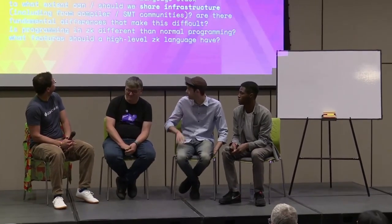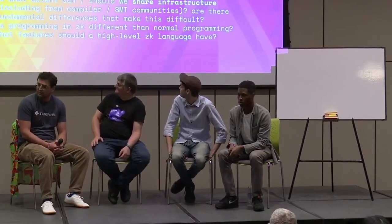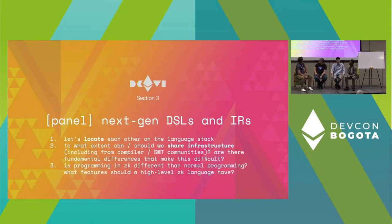Our next panel is on DSLs and IRs for ZK circuits. These are all implementers and authors of some very popular ZK DSLs and IRs. Today we have a few high-level questions: first, to locate each other on the language stack; second, to figure out to what extent we can share infrastructure; and lastly, a high-level question about what programming in ZK should look like — what's your ideal DSL?